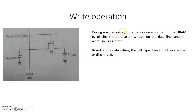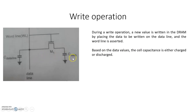During the write operation, a new value is written into the dynamic RAM by placing the data to be written on the data lines and activating the word line. Based on the data value, the cell capacitance is either charged — representing bit one — or discharged — representing bit zero.